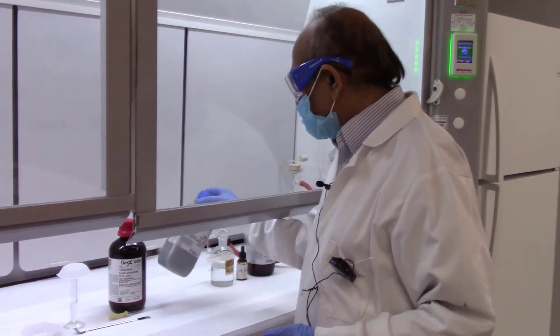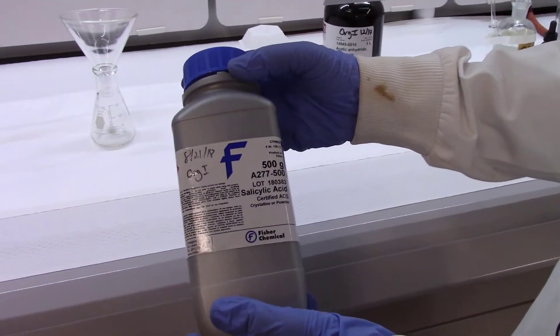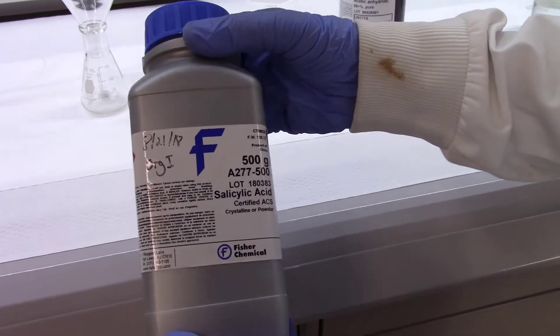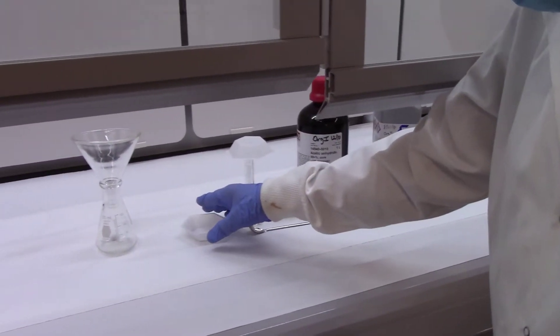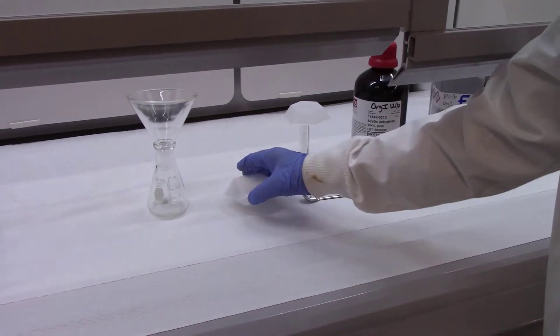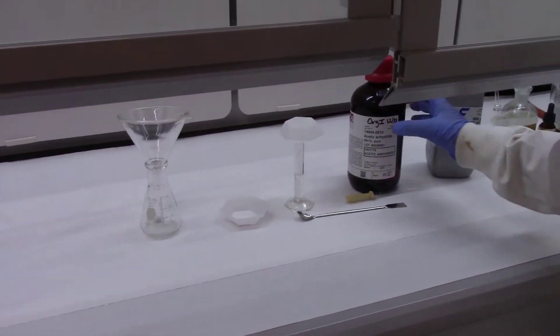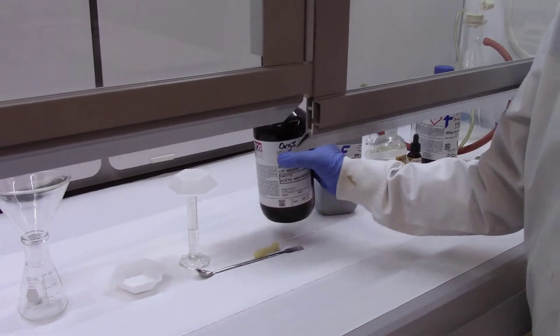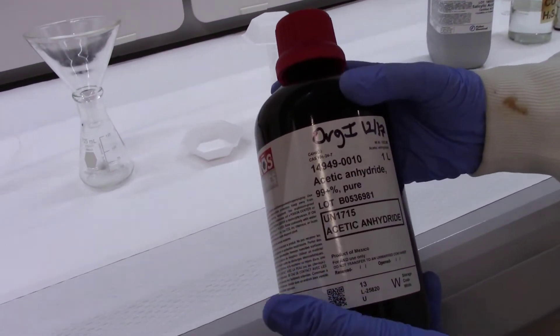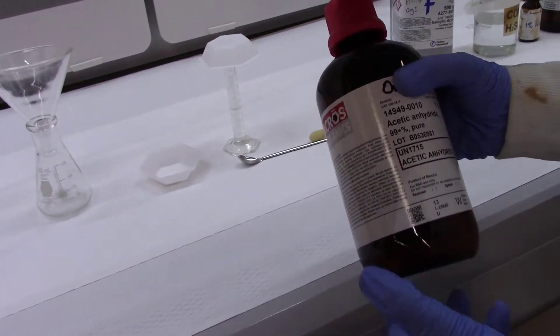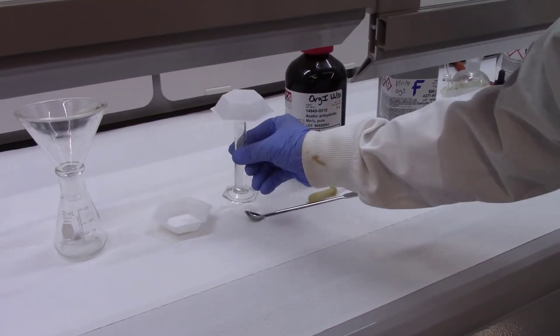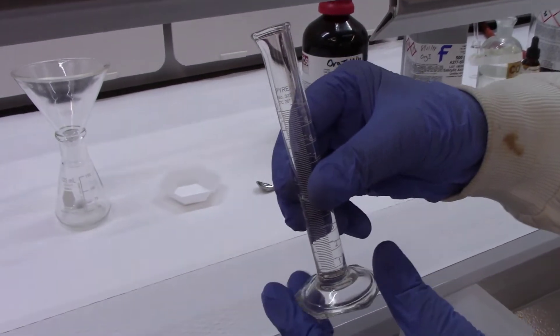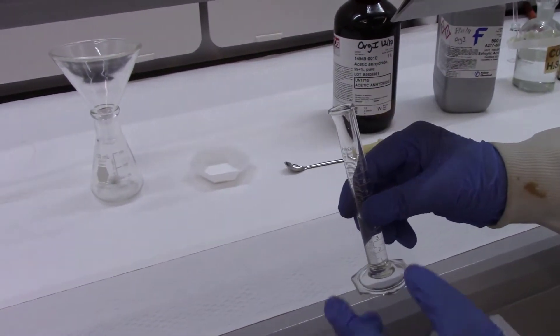Let me introduce to you the chemicals we'll be using, the reactants. This is salicylic acid, a natural product that will be used as a nucleophile. I have weighed two grams of this powder. And this one is the electrophile, acetic anhydride. I have measured five milliliters of acetic anhydride.